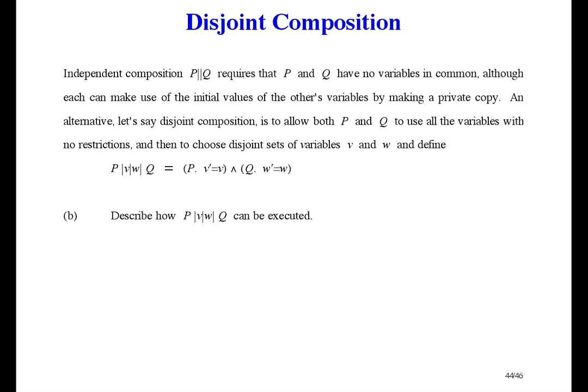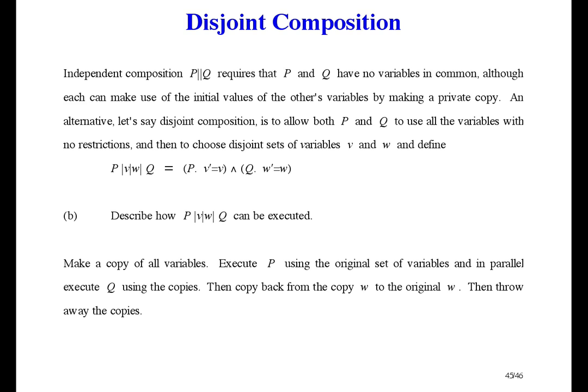Part B of the exercise asks us to describe how this kind of parallelism can be executed. Here's one way. Make a copy of all variables. Execute P using the original set of variables, and in parallel, execute Q using the copies. Then, copy back from the copy W to the original W. Then throw away the copies. There may be variables other than V and W. If so, their final values are arbitrary, and this implementation makes them be what P says they should be.